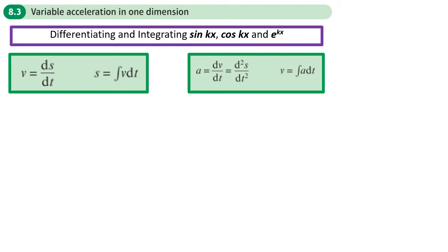This is the third section in the Further Kinematics chapter, Chapter 8, and it's variable acceleration in one dimension. You already know that if your acceleration is constant, but where we have variable acceleration we need to differentiate and integrate to convert between displacement, velocity, and acceleration.